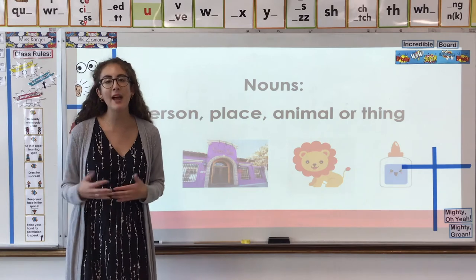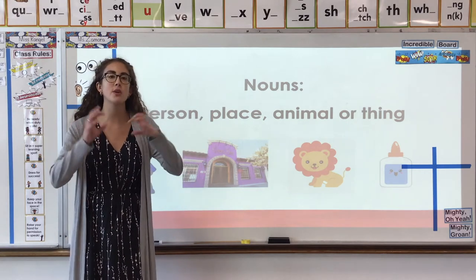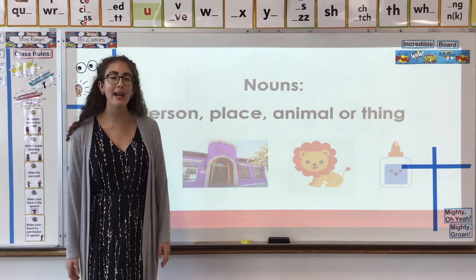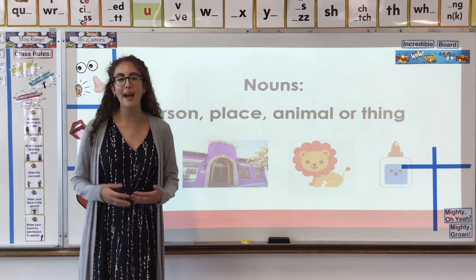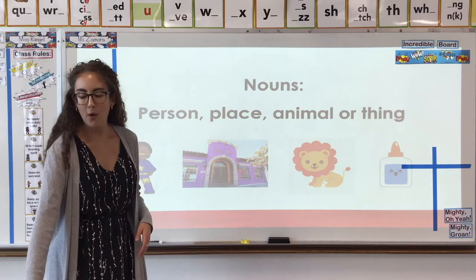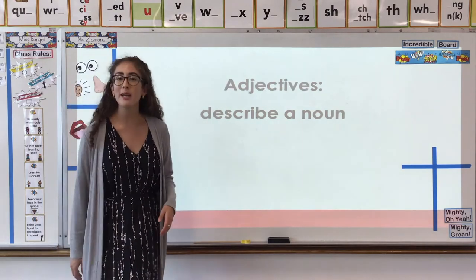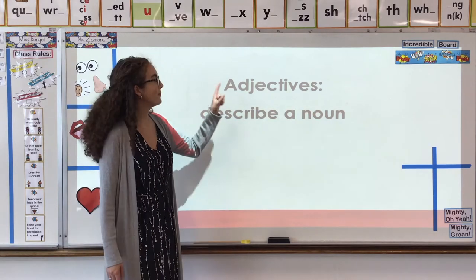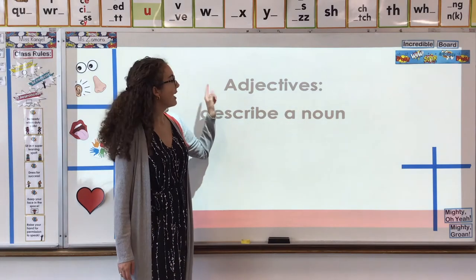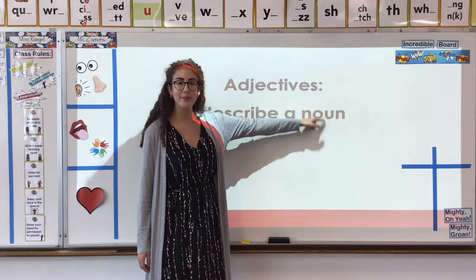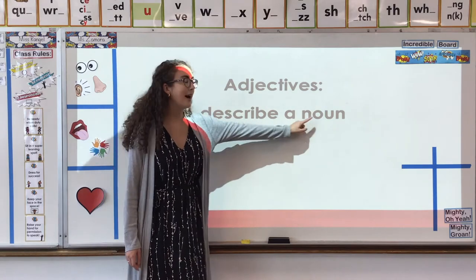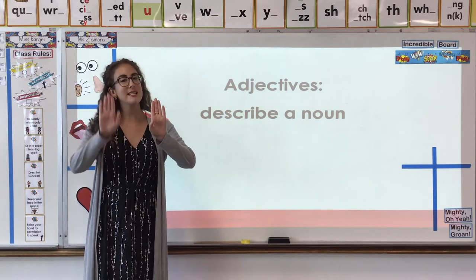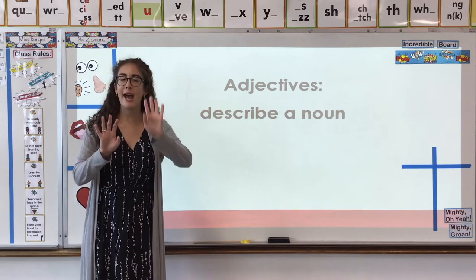We are going to learn about another part of speech that goes with a noun. A noun is just a single word — it's by itself — but we can add other words to it. We are going to be adding what we call adjectives. Adjectives describe a noun, so they go with a noun, always in front, and they describe that noun — that person, place, animal, or thing.